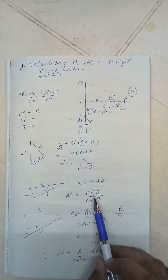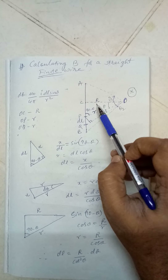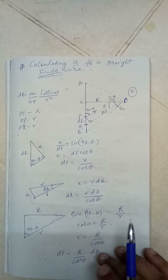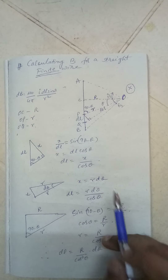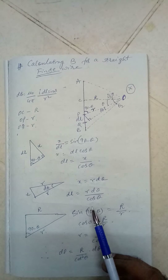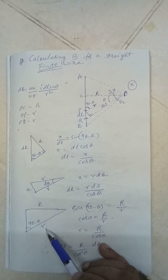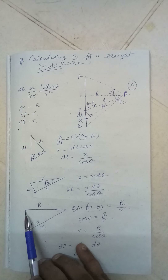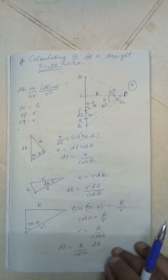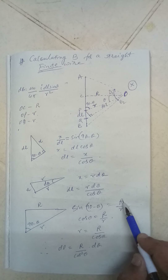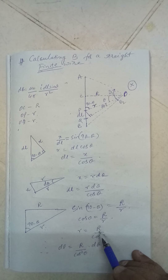Capital R is the known value but small r is a general distance, so we need to convert to a known value. In triangle OCP: r is the opposite side and small r is the hypotenuse. So sine of (90 minus theta) equals capital R divided by small r, which lets us convert small r into capital R.